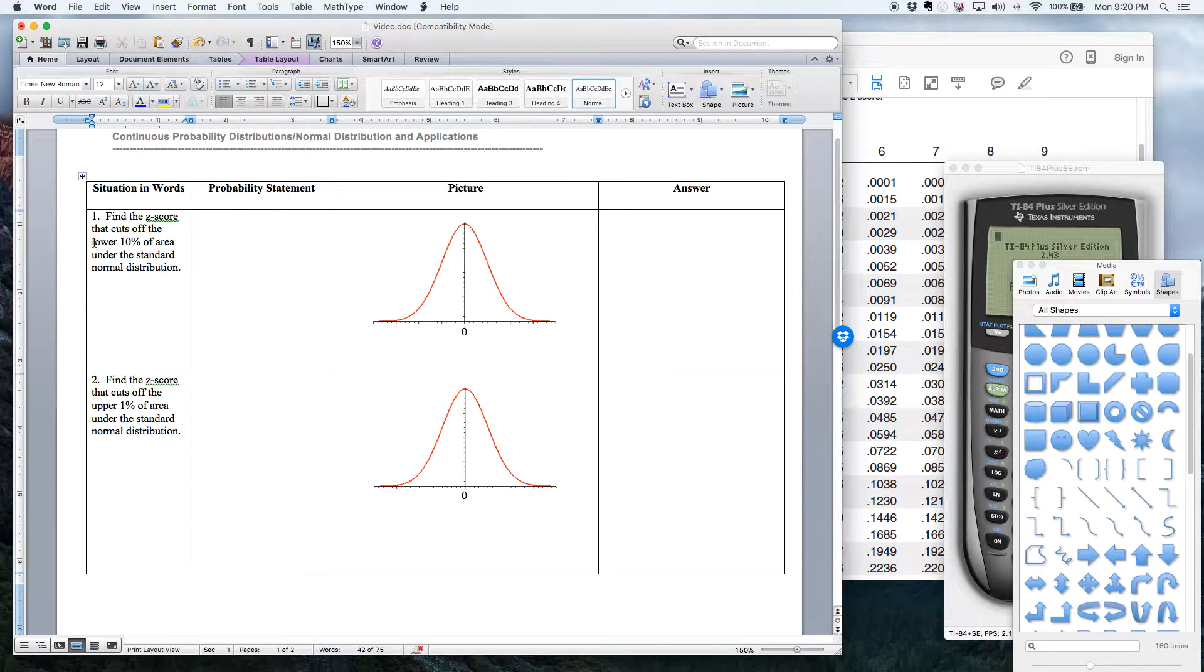So number one here says find the z-score that cuts off the lower 10% of area under the standard normal distribution. All right, this phrase here, lower 10% of area, under the bell curve, that lower 10% would be somewhere over here. I'm gonna draw it bigger than it probably actually is because it's easier to see, obviously.